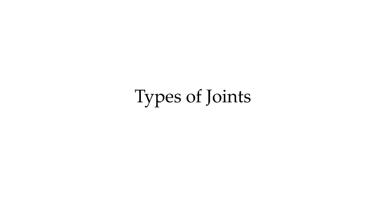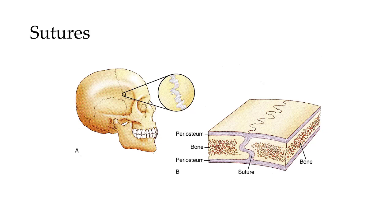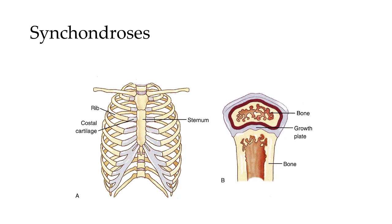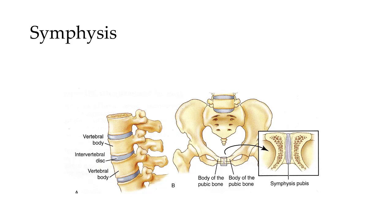Now let's take a look at some examples of each. Sutures, found in the skull and pelvis, are where bones are essentially fused together. Syndesmoses are bound by ligaments with no joint capsule — the interosseous membrane between the radius and ulna is an example. Synchondroses have hyaline cartilage separating the bones, as at the sternum and first rib. Symphyses have a fibrocartilage pad, as at the intervertebral joints and pubic symphysis.